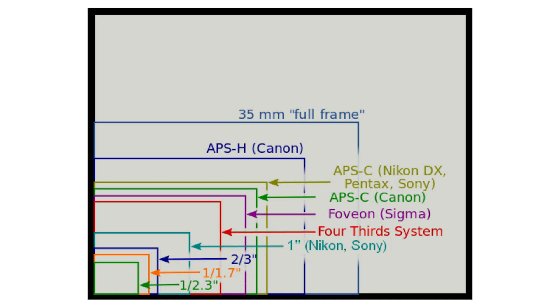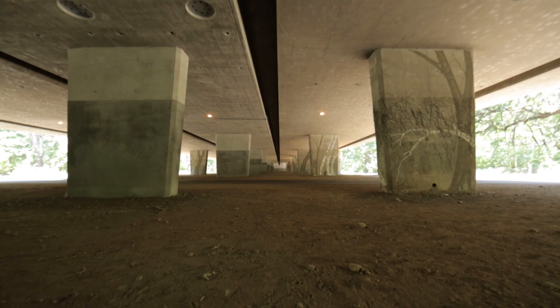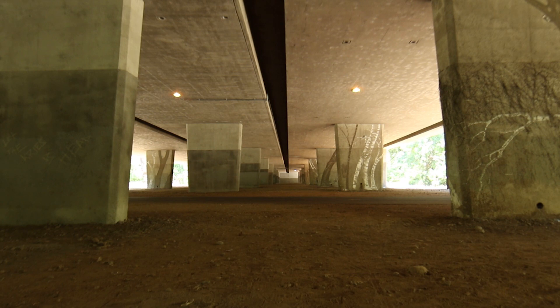You might have heard of the term crop factor before. The crop factor refers to the size of your camera's image sensor and its relation to a full-frame image sensor. All lens focal lengths are based on the camera having a full-frame sensor, which is designed to be the same size as 35mm film. For example, if you put a 35mm lens on a full-frame camera, it gives you a standard 35mm angle of view. However, if you put the same lens on a camera with a smaller sensor, you capture a smaller portion of the angle of coverage — this effectively creates a more narrow angle of view, referred to as a focal length multiplier or crop factor. The smaller sensor effectively crops the image that your lens is capable of projecting.